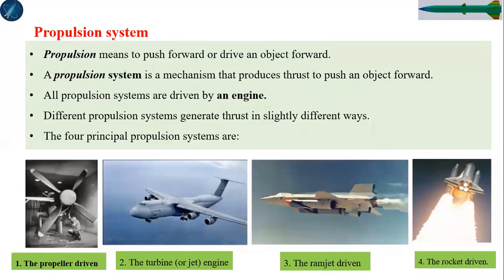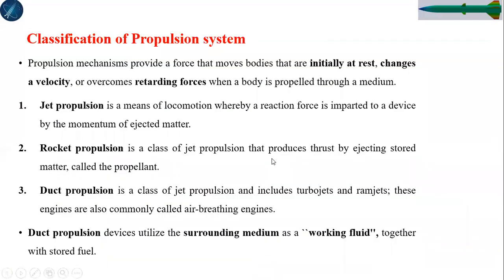After that, we looked at various types of propulsion systems. Some are propeller-driven, others are turbine-driven. Some propulsion systems use ramjet and others scramjet. Rocket propulsion is also another fundamental one — the one we are mostly concerned with in most of the next lectures. These are classified broadly as air-breathing and non-air-breathing types.